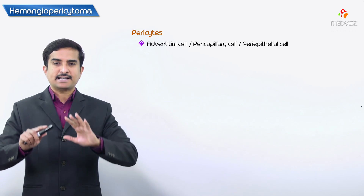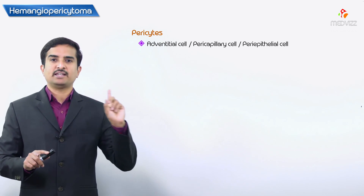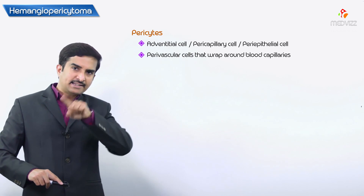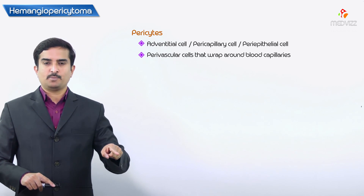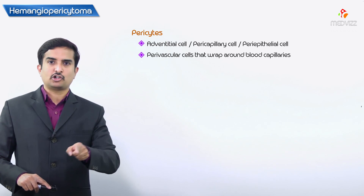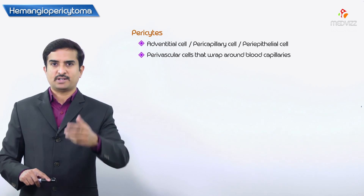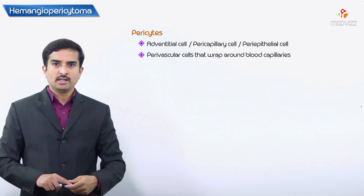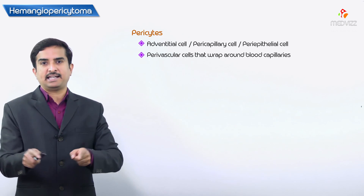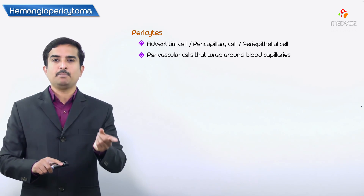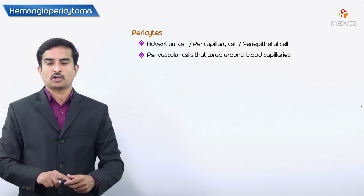Pericytes are also called adventitial cells, pericapillary cells, or periepithelial cells - all different synonyms. They are perivascular cells present upon vascular channels, that is venules as well as capillaries, that wrap around the blood capillaries. 'Peri' means around, 'cyte' means cell.